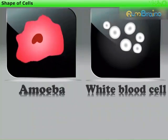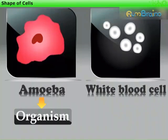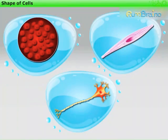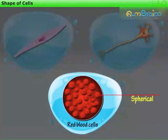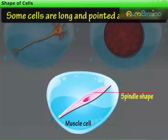But an amoeba is an organism capable of independent existence, whereas a WBC is a cell. Generally, cells are round, spherical, or elongated in shape. For example, spherical red blood cells of humans. Some cells are long and pointed at both ends. These cells resemble the spindle shape. For example, muscle cells.